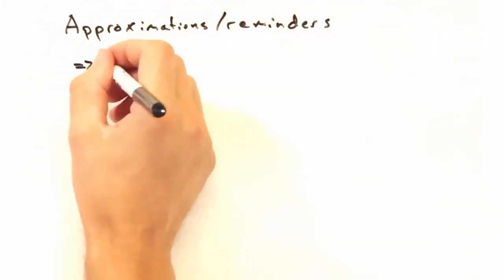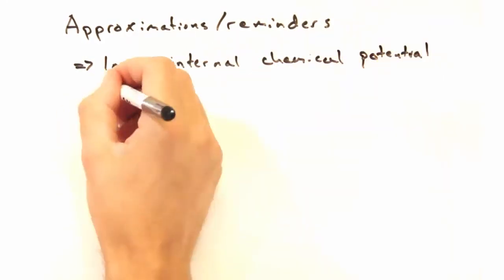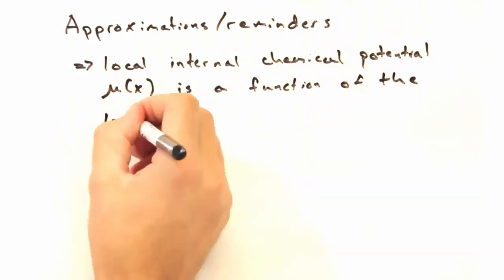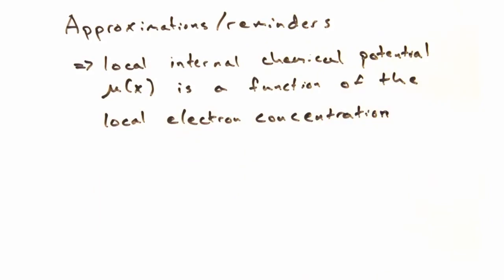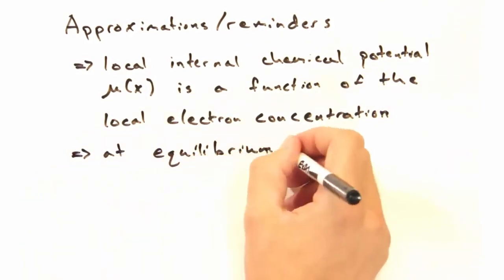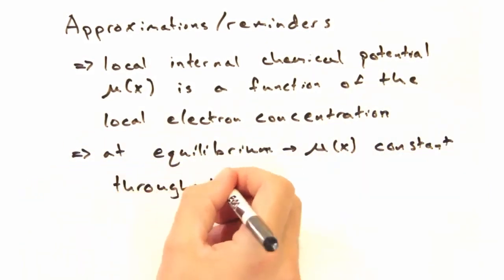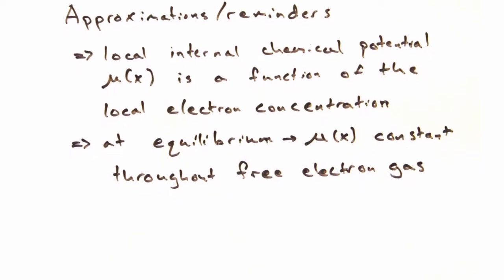Let's start by invoking that the local internal chemical potential is a function of the local electron concentration, n. Additionally, we know that at equilibrium, the chemical potential is constant throughout this free electron gas.